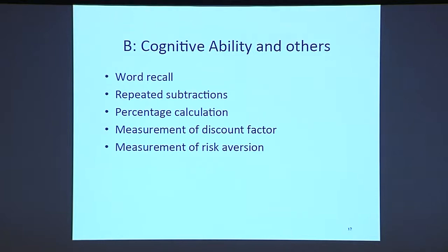Section B on cognitive ability contains word recall — we give respondents 10 words and ask them to recall them after a minute, then ask again after completing certain other sections. It also includes repeated subtraction, which is subtracting 7 from 100 repeatedly; percentage calculation; measurement of discount factor, where respondents choose between $100 today versus $110 three years from now; and measurement of risk aversion.